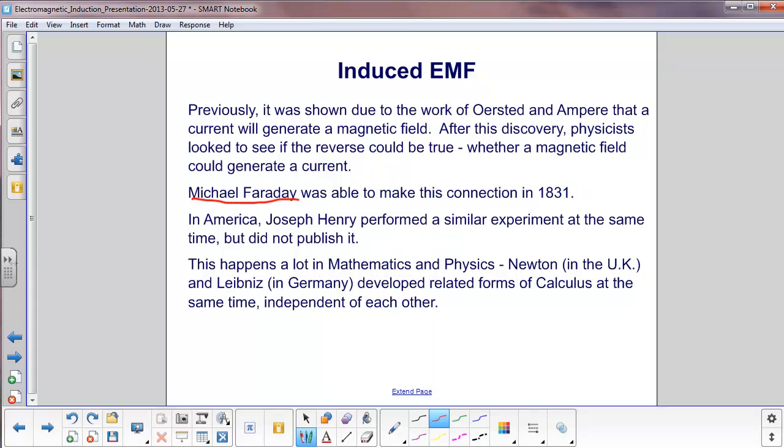At the same time in America, Joseph Henry performed a similar experiment, but did not publish it. This happens a lot in mathematics and physics. Probably the greatest example is Sir Isaac Newton in the UK and Gottfried Leibniz in Germany developed related forms of calculus at the same time independent of each other.